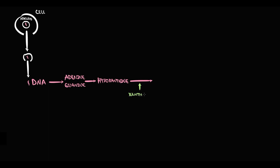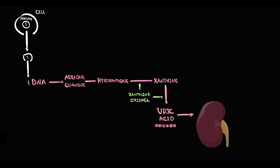Adenine and guanine undergo conversion to hypoxanthine, and hypoxanthine undergoes oxidation provided by a specific enzyme called xanthine oxidase. As a result, xanthine is produced. Then xanthine is again converted by xanthine oxidase into uric acid. Uric acid is excreted by the kidneys into the urine, but some portion of uric acid can be reabsorbed into the blood. This reabsorption is provided by uric acid transporter 1.